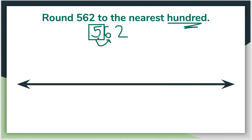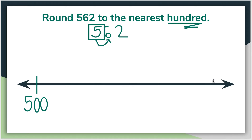This number says 562, which tells me that I need to stay in the five hundreds. So five hundred is going to be my first hundred. And the hundred that comes after five hundred would be six hundred.